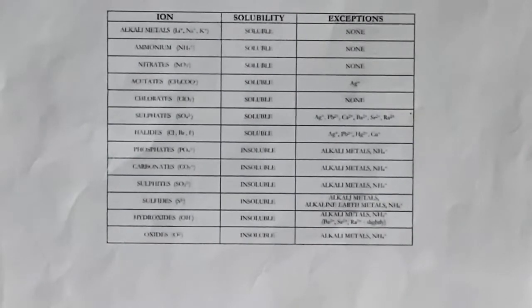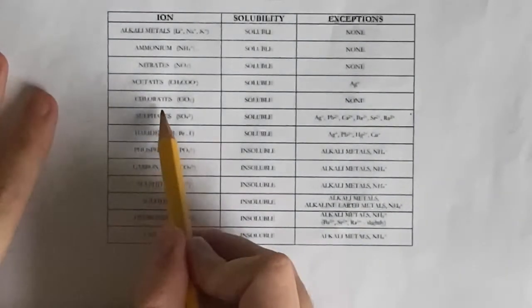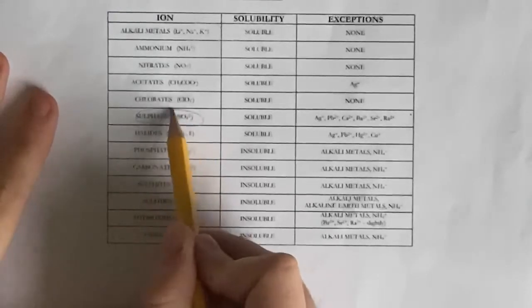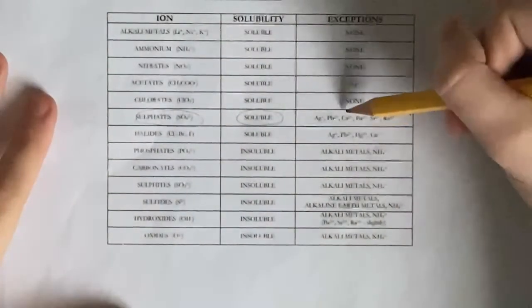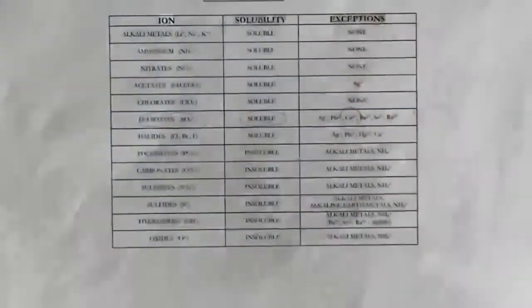Here's a different example. Calcium sulfate would be a solid. Here's why. According to the table, sulfates are soluble. However, calcium is part of the exceptions, meaning that the compound would be insoluble, overall making it a solid.